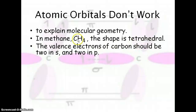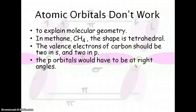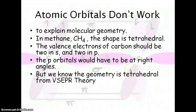But when you're thinking about what's actually involved in the bonding, the valence electrons of carbon are 2 in the s orbital and 2 in the p orbital — 2 in the 2s and 2 in the 2p. We know that two p orbitals are at 90 degree angles to each other, but that's not what we get when we have a tetrahedral shape. So this is not really making sense.